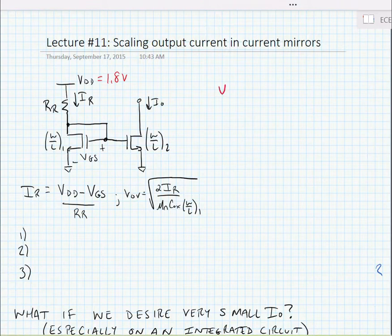And we can generally say that the overdrive voltage, VOV, is equal to VGS minus VTH, the threshold voltage.